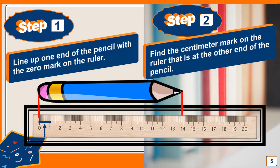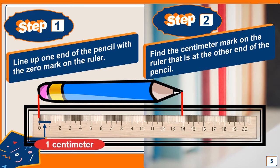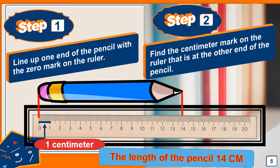The distance between zero and one is 1 centimeter. What is the length of this pencil? If we look at the pencil, the beginning point is on zero and the ending point is on 14, so the length of the pencil is 14 centimeters. Now all of us can use the ruler to measure the length of small objects!